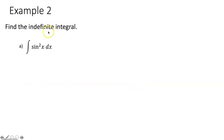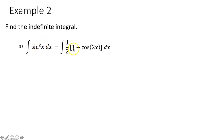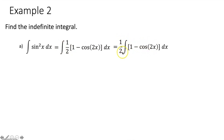Example two: find the indefinite integral of sine squared x dx. There's no special integral formula for sine squared x dx, so we use a half angle identity: sine squared x equals one half times the quantity (1 minus cosine of 2x). We substitute that in, then move the one half constant out front of the integral sign to multiply at the end.